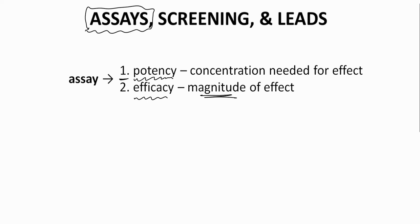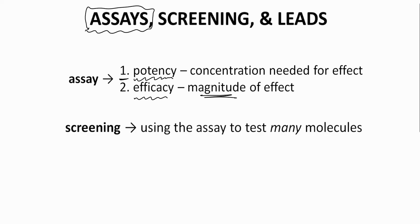With an assay in hand, the discovery team will test the potency and efficacy of a large number of molecules against the selected target. This is the screening campaign. During a screening campaign, potentially over a million molecules may be tested. Screening campaigns are often automated to increase speed and reproducibility. At the end of the campaign, the discovery team will have potency and efficacy data on all the screened molecules.